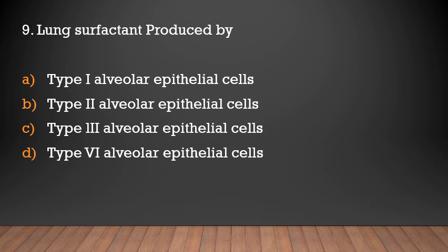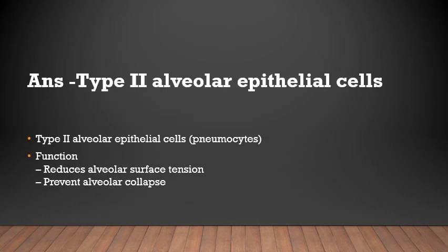Lung surfactant is produced by: type 1 alveolar epithelial cells, type 2 alveolar epithelial cells, type 3, or type 4? The answer is type 2 alveolar epithelial cells, otherwise known as pneumocytes. Their functions include reducing alveolar surface tension and preventing alveolar collapse.